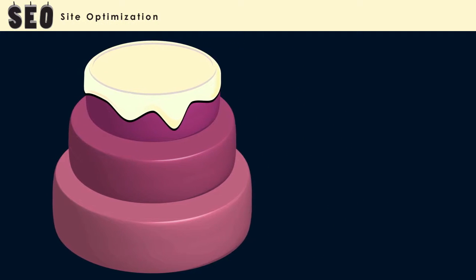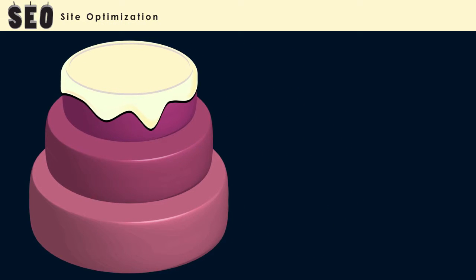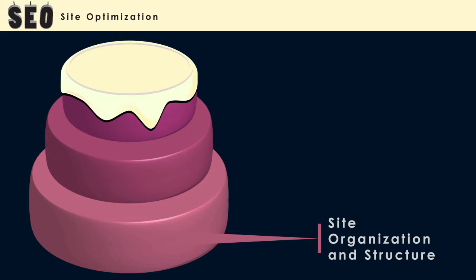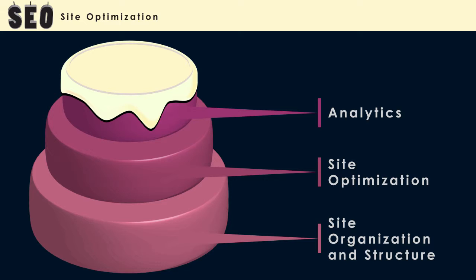If you think of SEO as a three-layer cake, the layers would be site organization and structure, then site optimization, then analytics. Finally, the finishing touch or the frosting would be promotion that includes, among other things, social media, blogging, and paid ads.